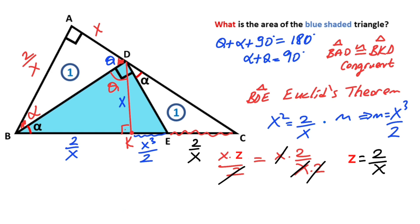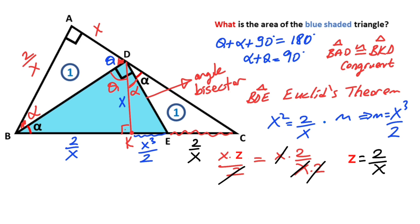Notice that here is 90 degrees, which means this angle must equal alpha. Therefore we get one more angle bisector.